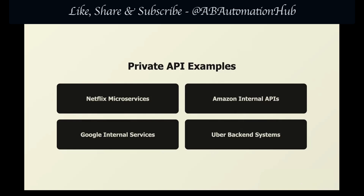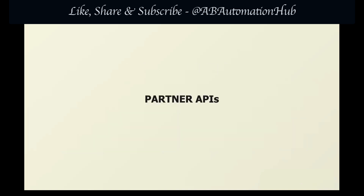But what if you want something in between — giving access to some companies but not everyone? That's where partner APIs come in. Partner APIs sit right in the middle: they are not fully public and not fully private. It is a form of open API, but with one exception — access is granted under certain conditions defined by the publisher. Think of it like an exclusive club: you can't just walk in, you need to be invited, sign agreements, meet requirements, and then get approved. These APIs are often used to monetize products.